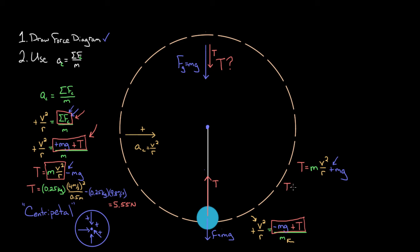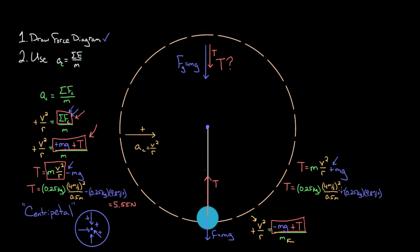Plugging in numbers, the tension at the bottom is 10.45 Newtons — larger than at the top. This makes sense: at the bottom, gravity not only fails to help the tension, it actively pulls the mass away from the center, so tension must overcome that effect on top of providing the centripetal force. To recap: for centripetal problems, inward toward the center is always positive. A downward force can be positive centripetal at the top but negative at the bottom of the same path.